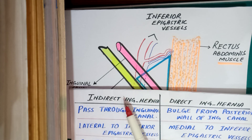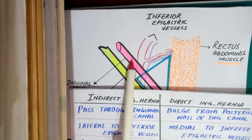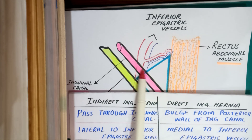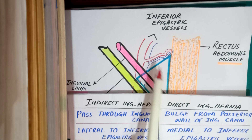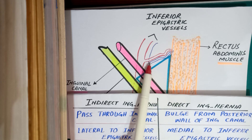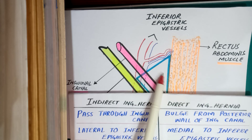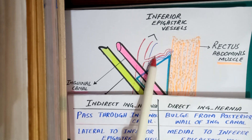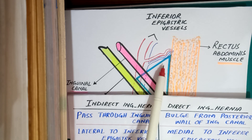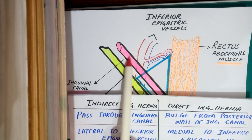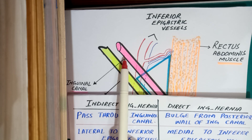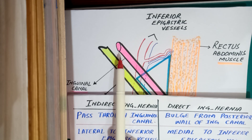The second difference: indirect inguinal hernia passes lateral to the inferior epigastric vessels, while direct inguinal hernia passes medial to the inferior epigastric vessels.